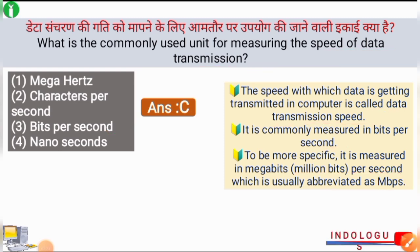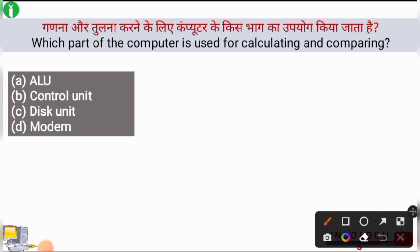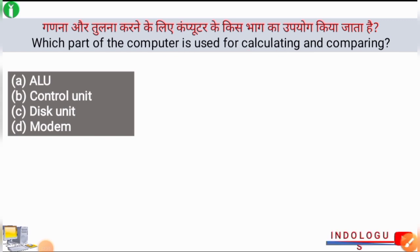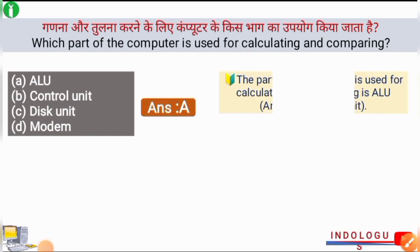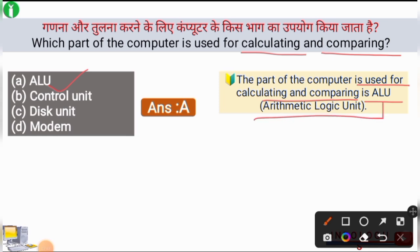MBPS is the abbreviation for million bits per second — you have to remember this. Next question: Which part of the computer is used for calculating and comparing? The right answer is option A, ALU. ALU, which stands for Arithmetic Logic Unit, is used for calculating and comparing in computers.